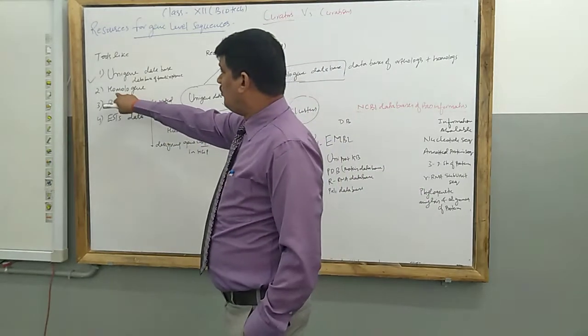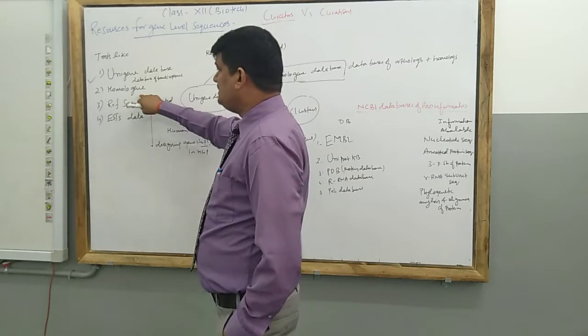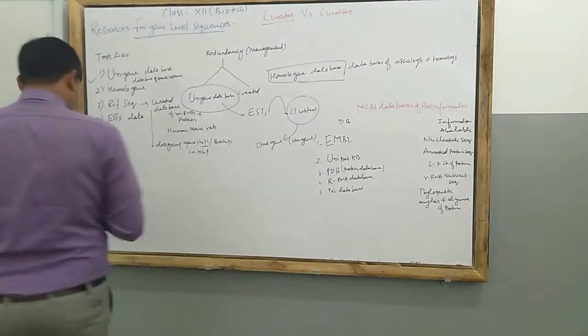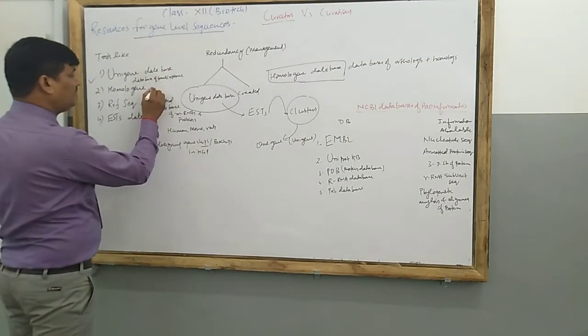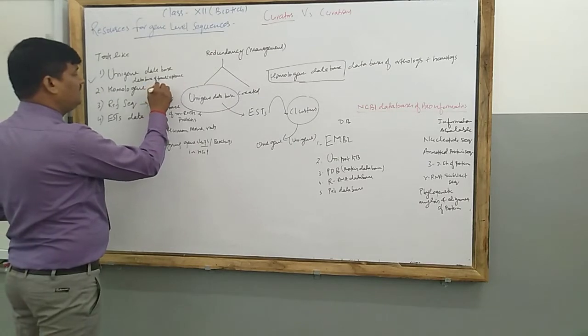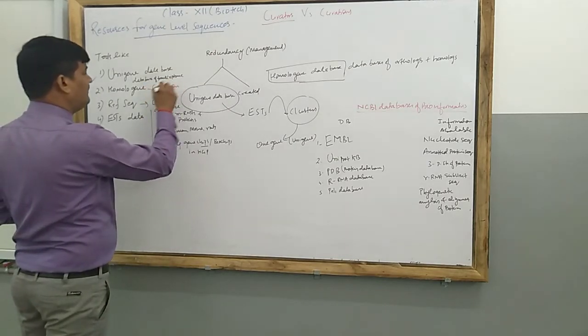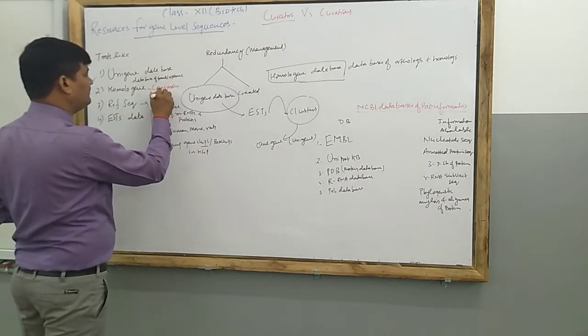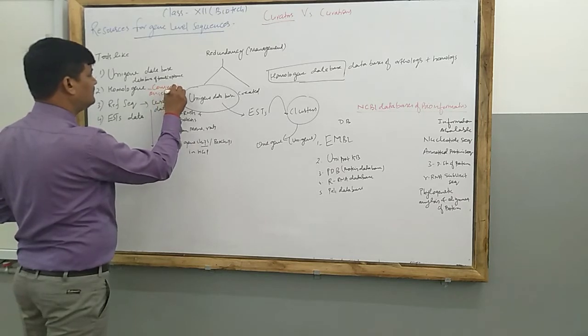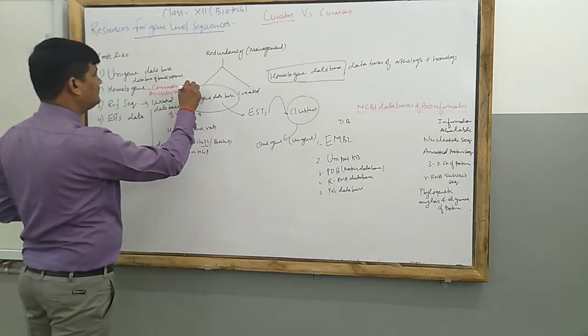Second one is homology. Homology is the term that expresses the common ancestry relationship.